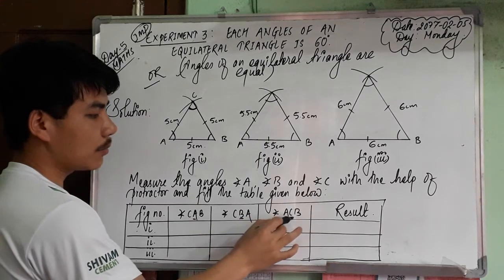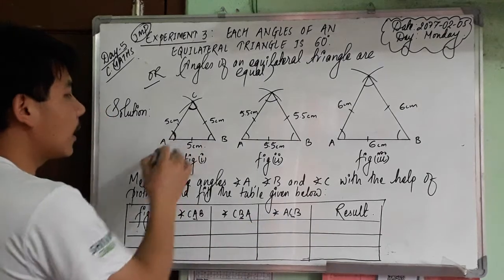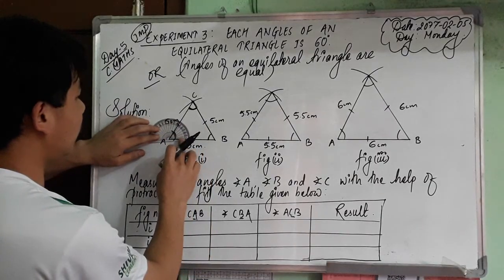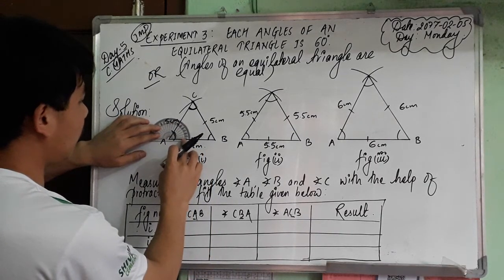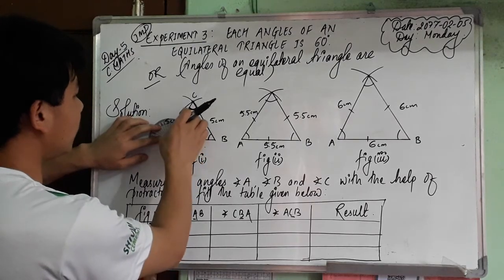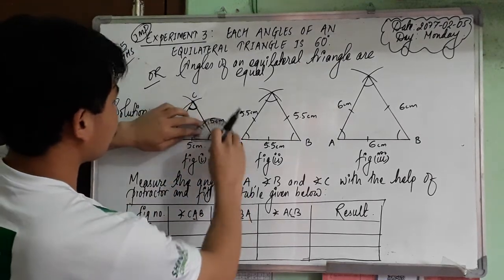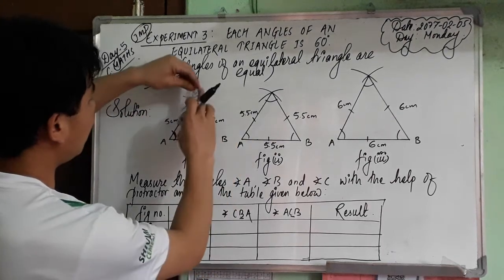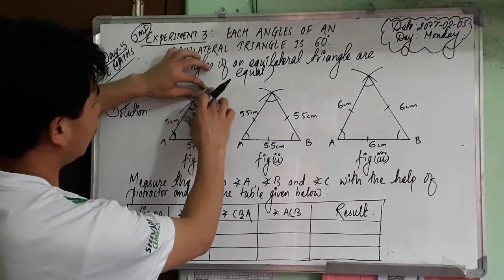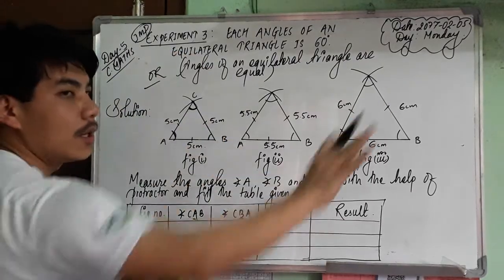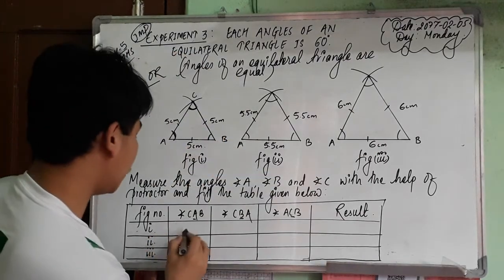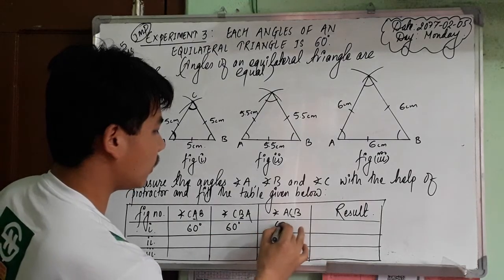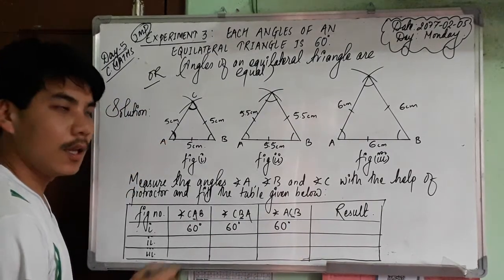A is the first angle, B is the angle here, and this one is the C angle. Measure this angle first with the help of a protractor — this one is 60 degrees. This is also 60, and this angle is also 60 degrees. Measure all angles like this: 60, 60, 60, 60, 60, 60.